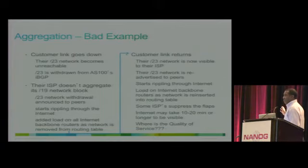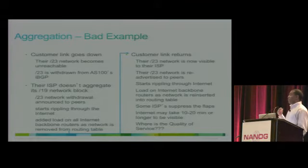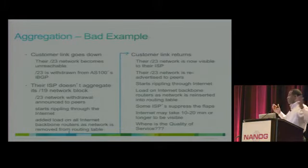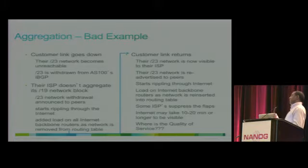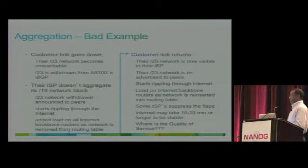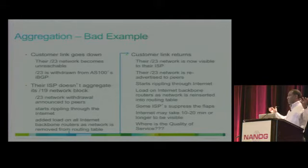Suppose the customer link goes down. When that happens, the route is withdrawn from the service provider, and the service provider withdraws it from the rest of the internet — propagating throughout the internet. When the link comes back, the customer advertises to the service provider, and the service provider advertises again to the internet, causing another churn. When this adds up from multiple service providers, it creates a lot of churn on the internet.